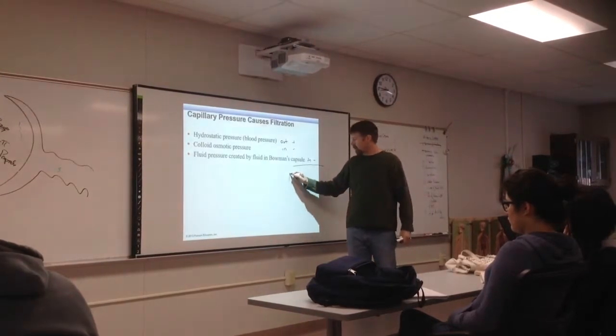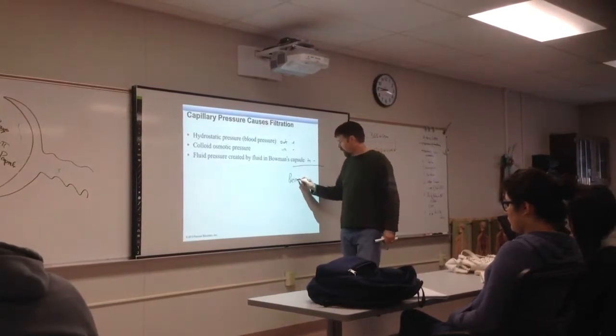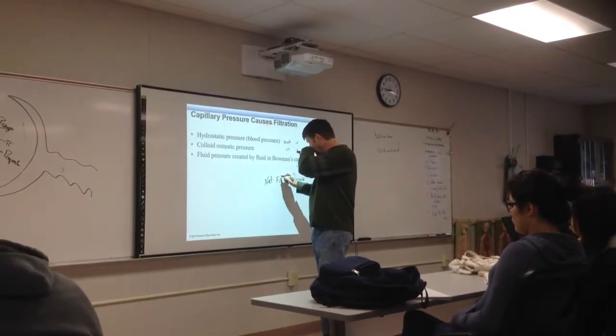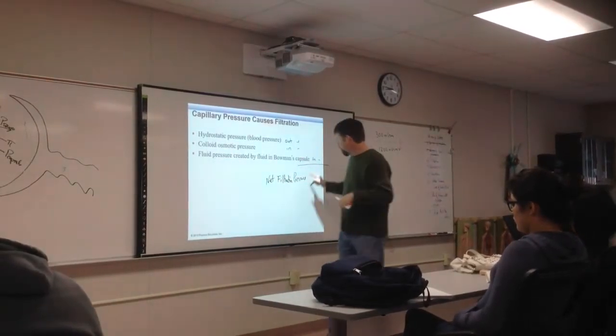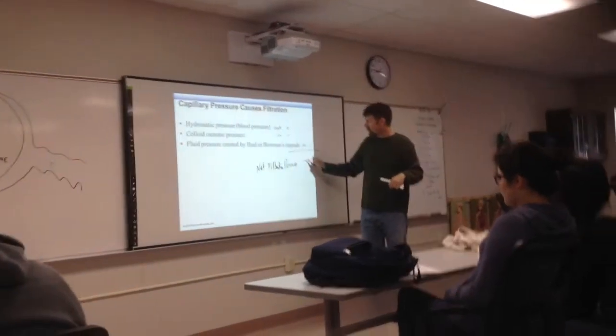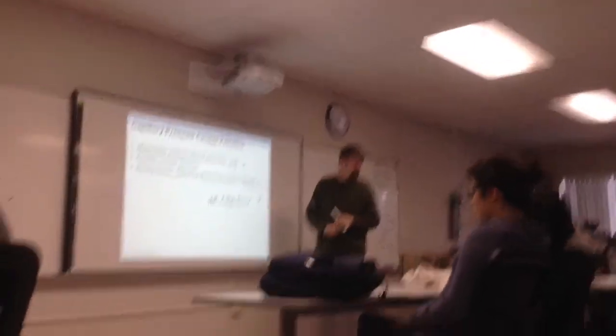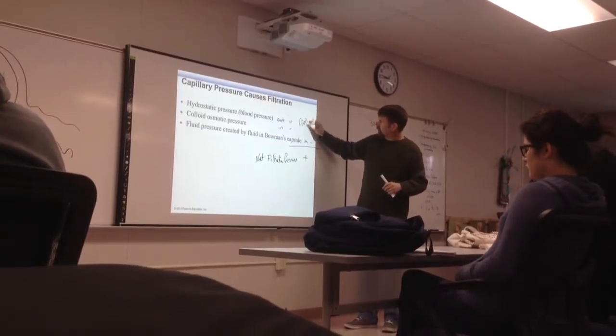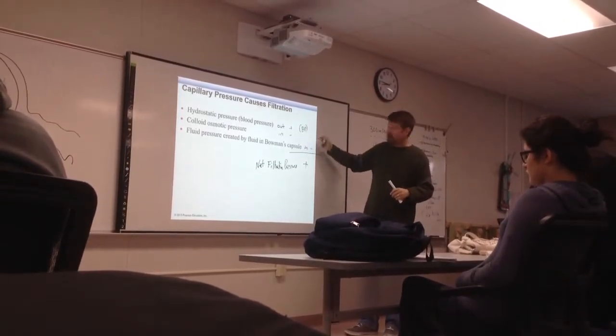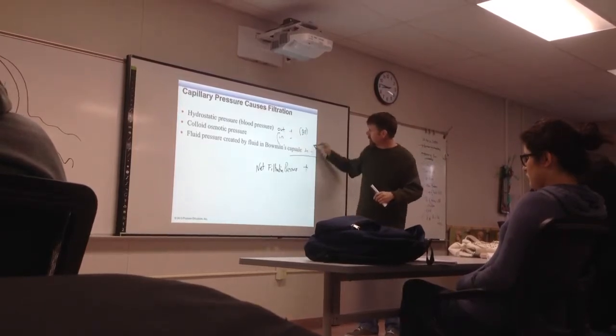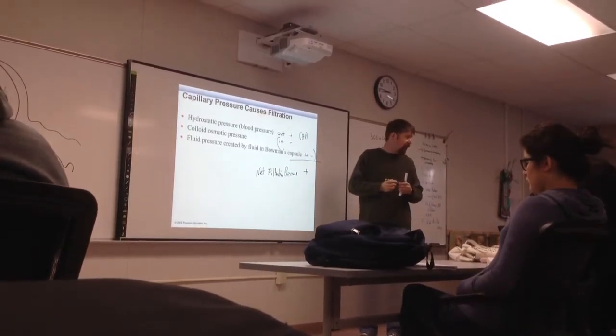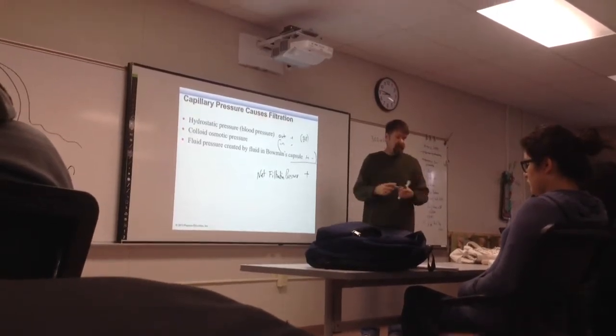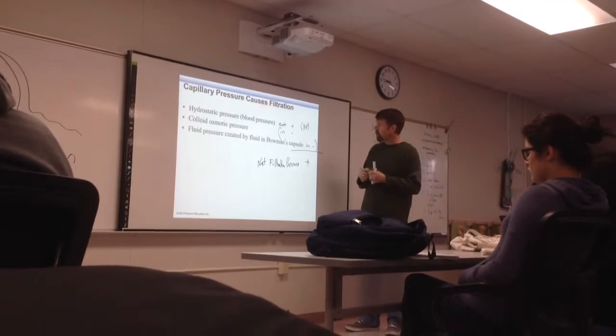So the resulting pressure, the net pressure, the net filtration pressure - if you're going to make filtrate, this net pressure has to be positive. So we've got to make sure that our blood pressure is higher than the combination or the sum of these two pressures here. Otherwise, if it weren't, we're going to be in trouble with regard to the amount of filtrate that we're going to produce.